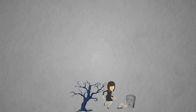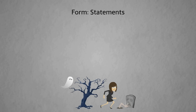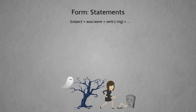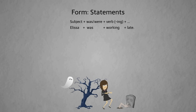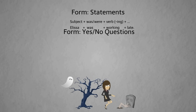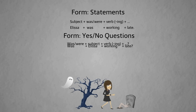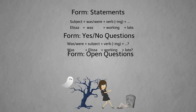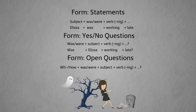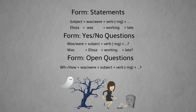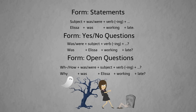Let's look at the form now. For statements: subject + was/were (or wasn't/weren't for negatives) + verb in the -ing form. For example, 'Alyssa was working late at the office.' For yes/no questions: was/were + subject + verb in the -ing form — 'Was Alyssa working late?' For open questions: wh-/how + was/were + subject + verb in the -ing form — 'Why was Alyssa working late?'